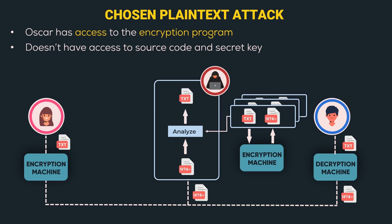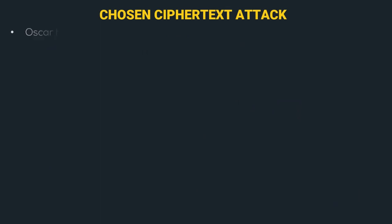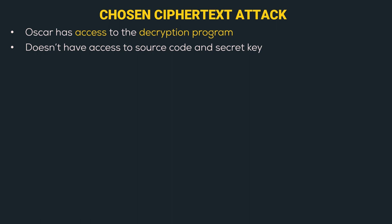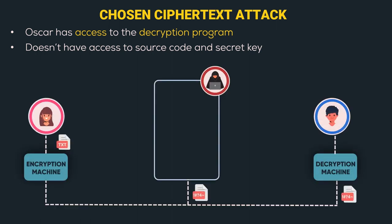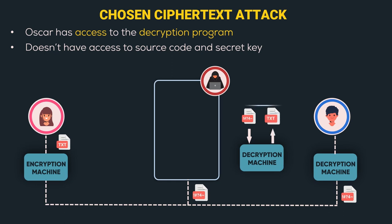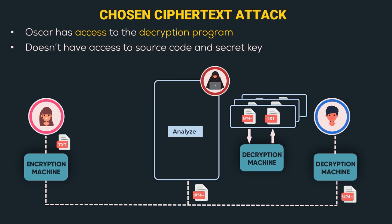The last one is the chosen ciphertext attack. Here Oscar has access to the decryption algorithm — but again, not to the source code or secret key. Oscar inputs his chosen ciphertext and gets the corresponding plaintext. He generates more such pairs in a similar fashion. The analyze function then receives the intercepted ciphertext and all these pairs of plaintext-ciphertext for analysis to obtain the plaintext.